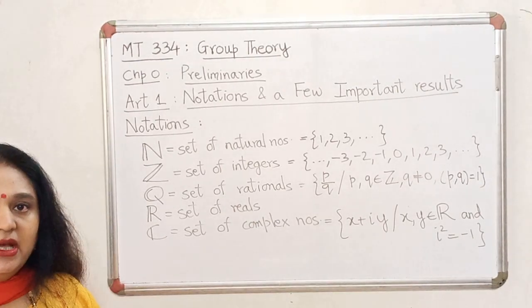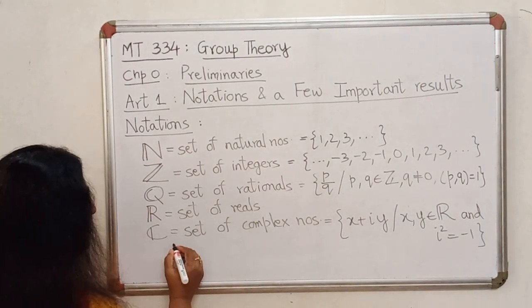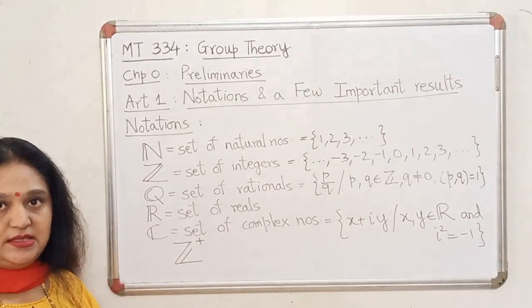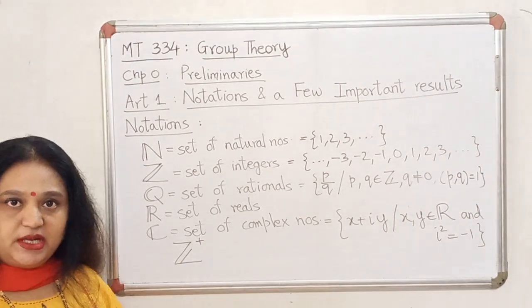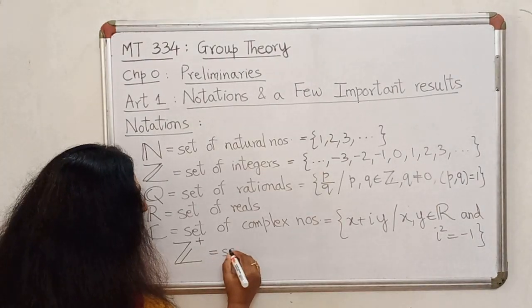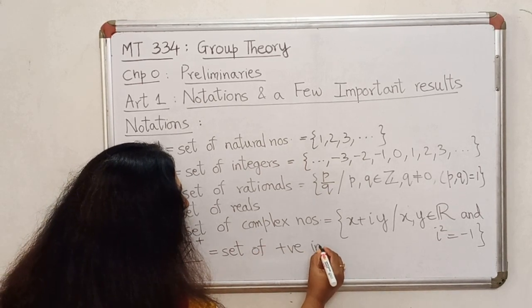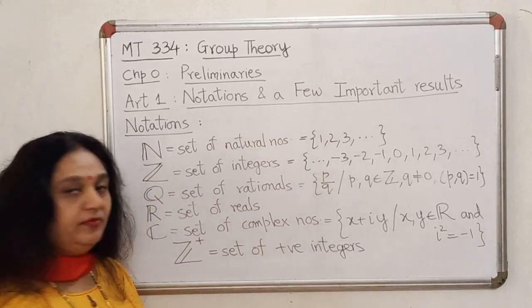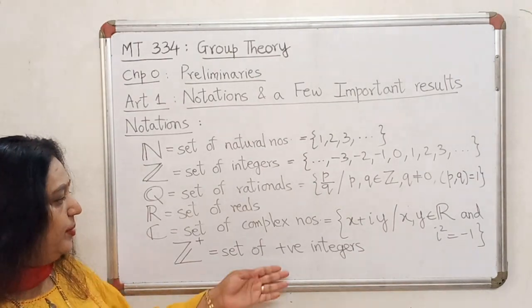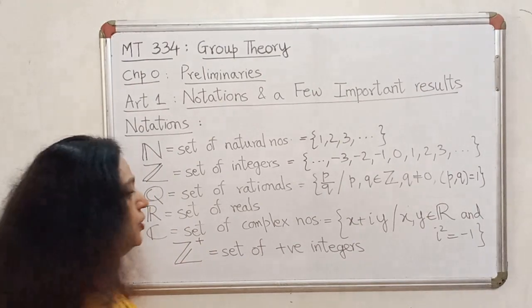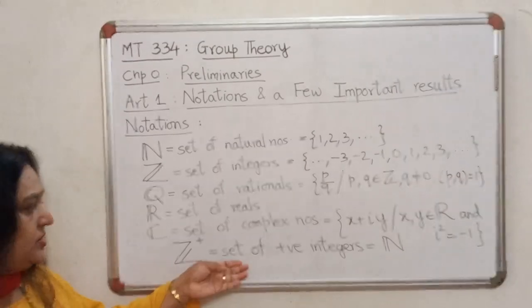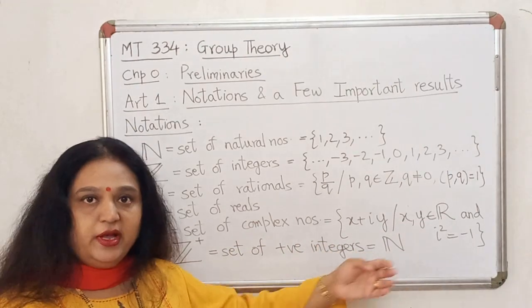In addition to these, there are a few other notations that you must know. For example, if I write Z with a superscript plus, this will denote the set of positive integers. And notice that if I actually write out the set of positive integers, then it will be just 1, 2, 3 and so on. So Z plus is actually the set of natural numbers. When I talk about set of positive integers, it is nothing but the set of natural numbers.